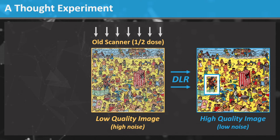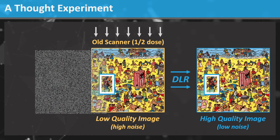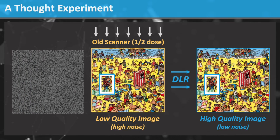Here he is. He is also here on the low quality image. Imagine how much harder, and how much more time it would take to find Waldo on this low quality image. The low quality image has high noise. DLR is able to remove that noise and produce the high quality image.